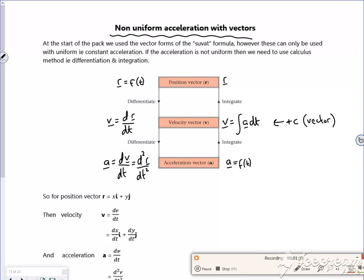And then if I integrate my velocity dt, that gives me the r value. And once again, that'll be a different plus c, but that'll be a vector.